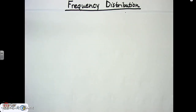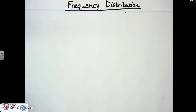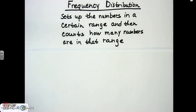Stem and leaf plots are done; frequency distribution is the next thing. The great thing about this section is that everything uses the thing before to help you get the next thing. A frequency distribution just sets up the numbers in a certain range and then counts how many numbers are in that range. It might not make complete sense right now, but it will in a few seconds.